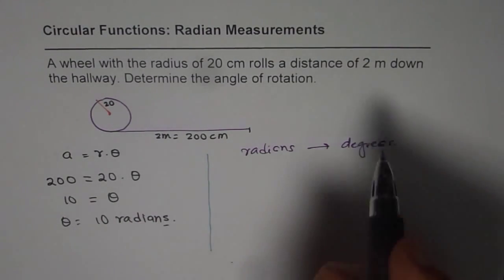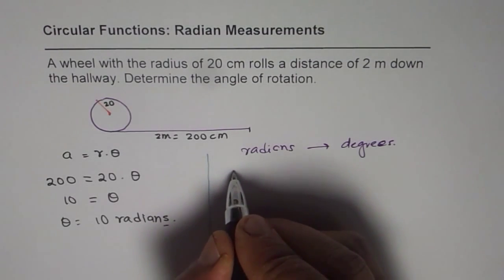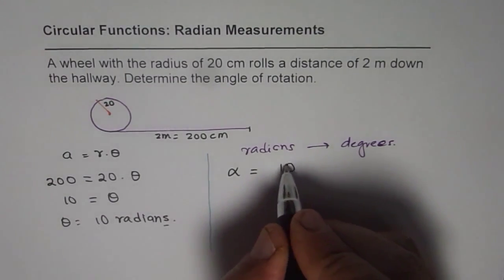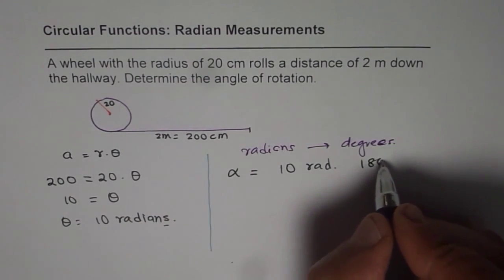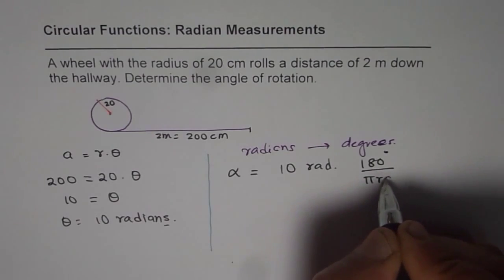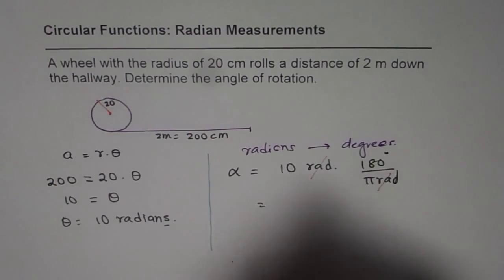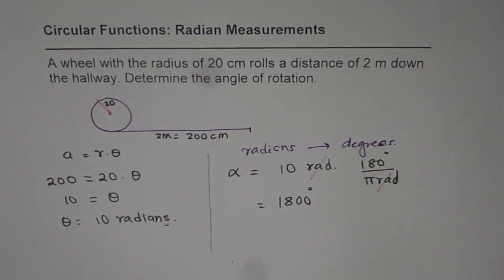Let's call the angle in degrees alpha. To convert 10 radians to degrees, we multiply by 180 degrees over pi radians — the radians cancel out. Therefore alpha equals 10 times 180 degrees, which gives us 1800 degrees.